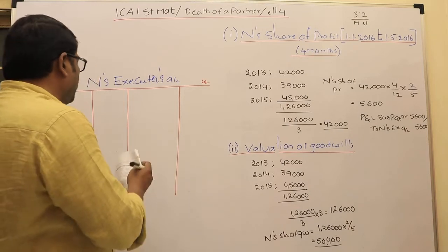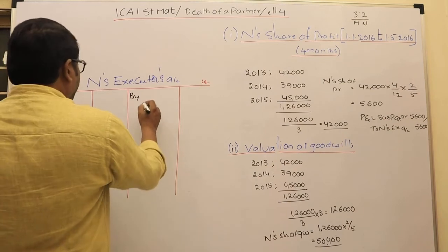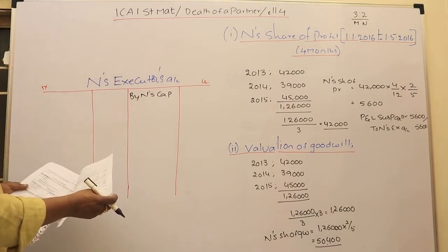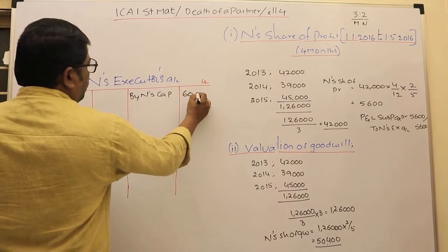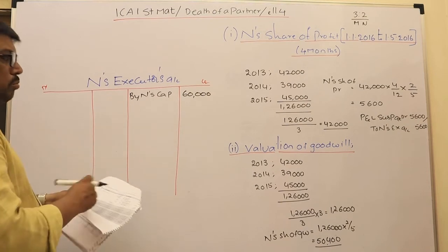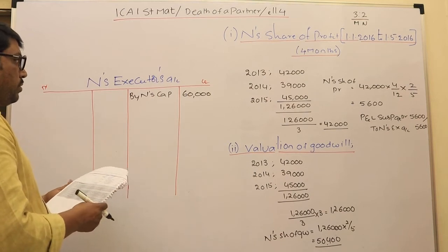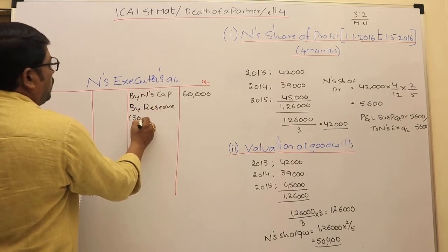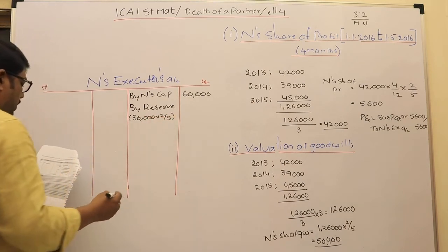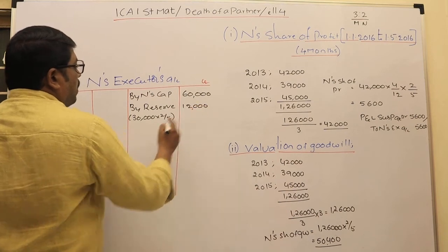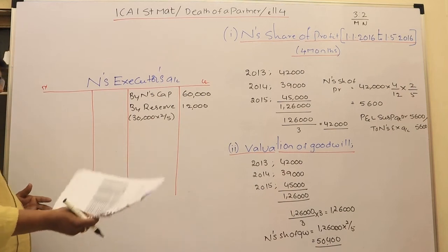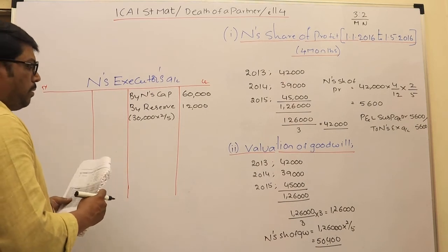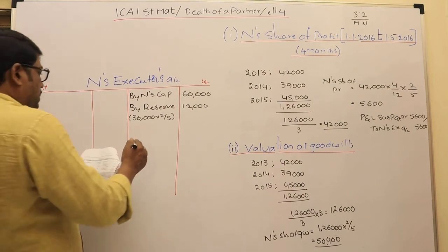All amounts to be given to N must be transferred to N's Executor's Account. First, N's capital balance of 60,000 is transferred. Additionally, the reserve of 30,000 is shared — N's 2/5th share is 30,000 × 2/5 = 12,000. For goodwill, N's capital account is credited and B's capital account is debited, as B is the only remaining partner and the gaining ratio falls entirely on B.